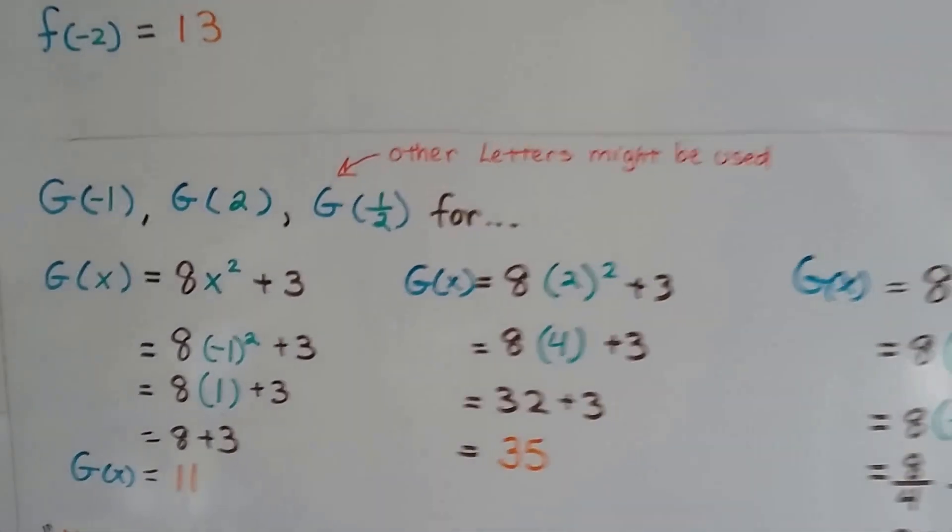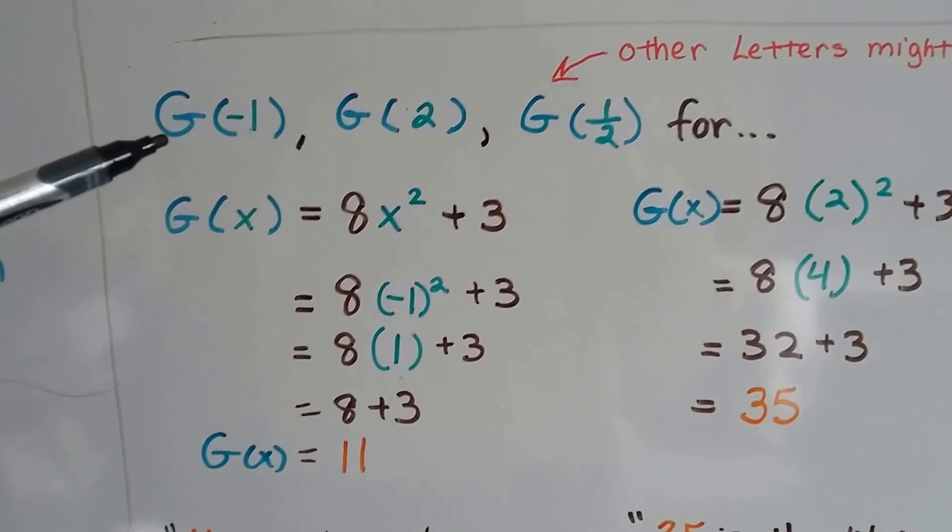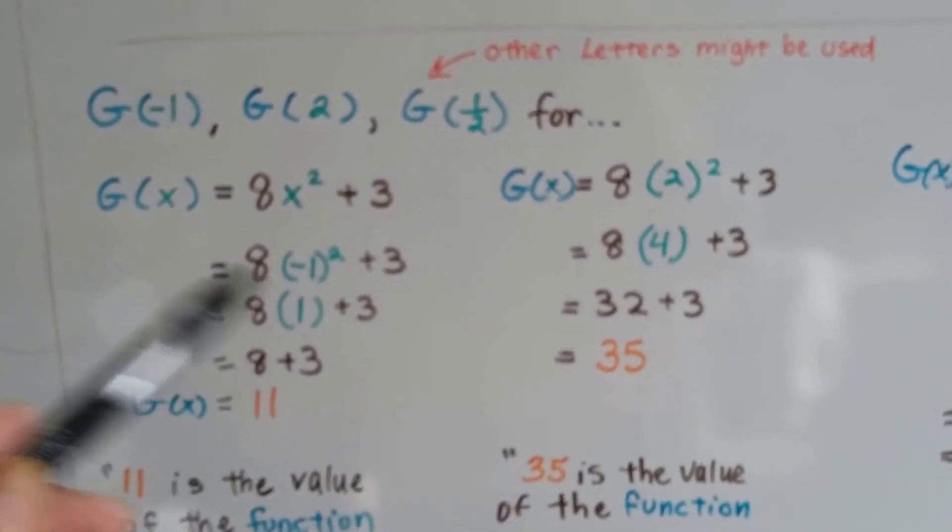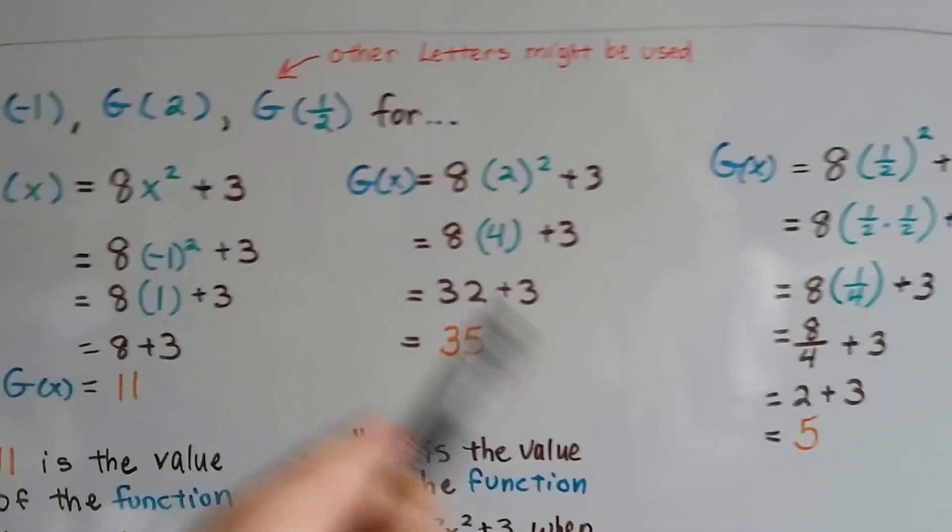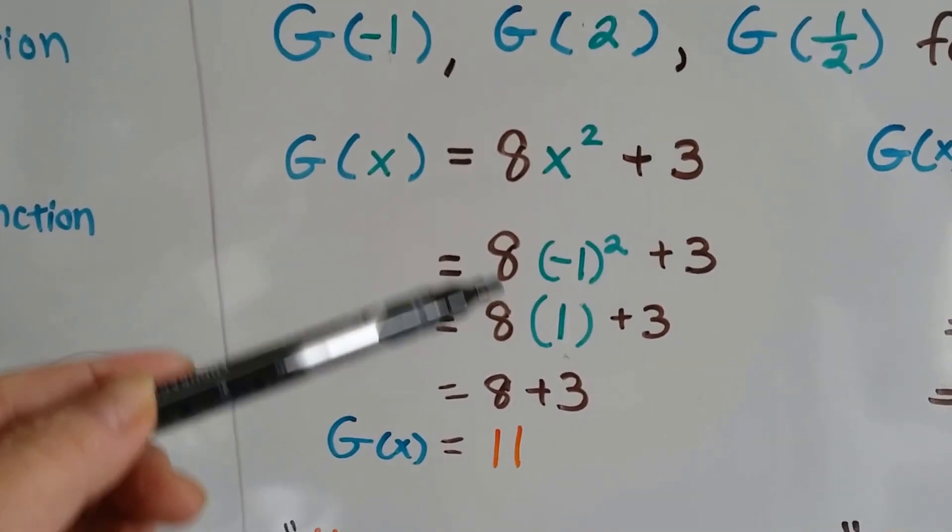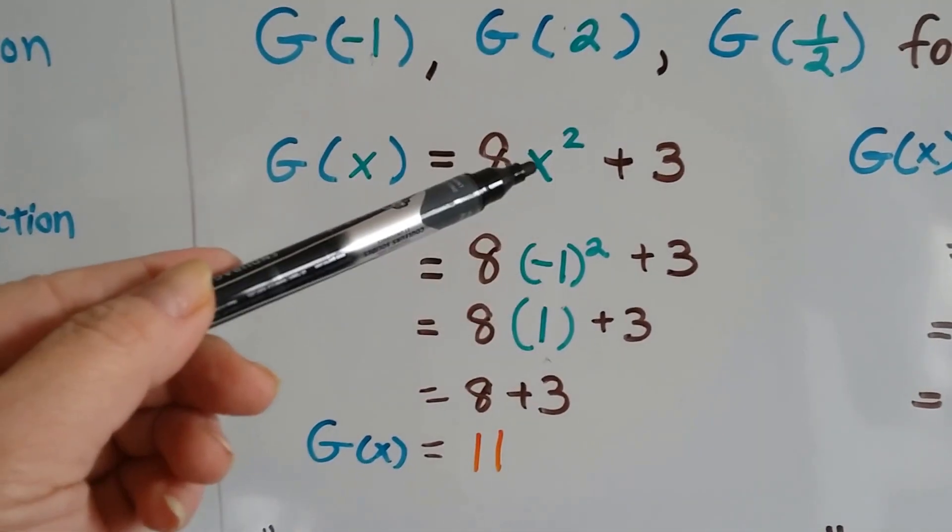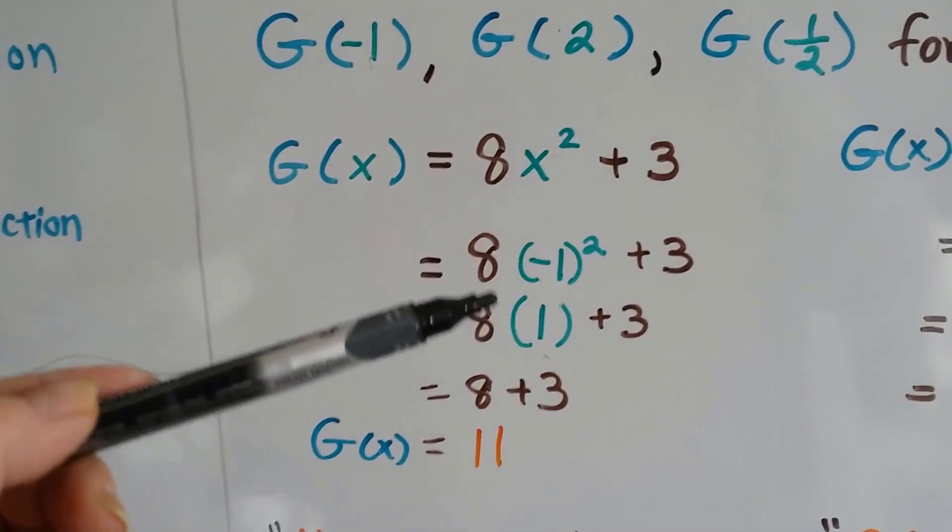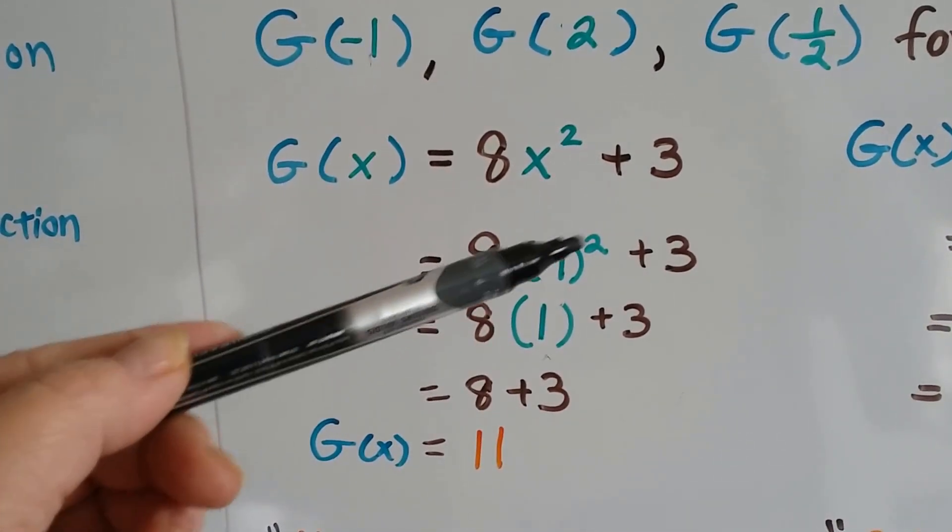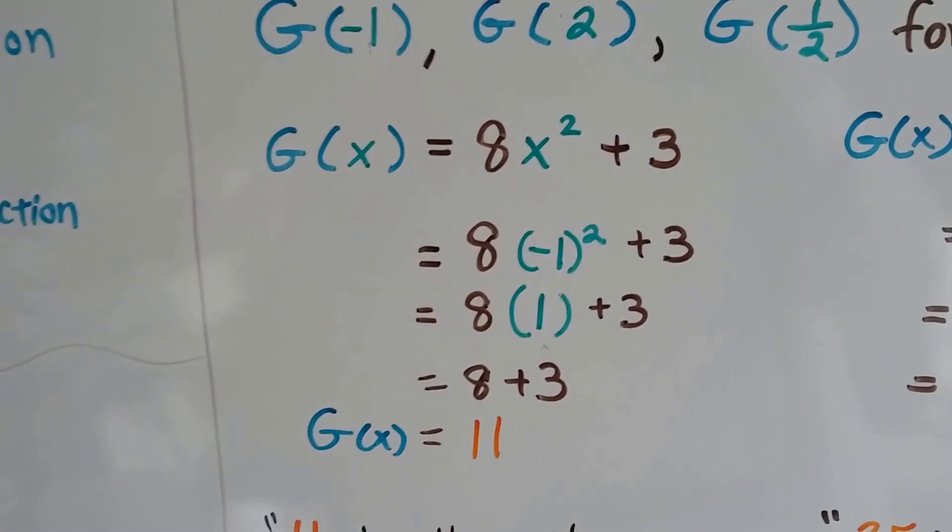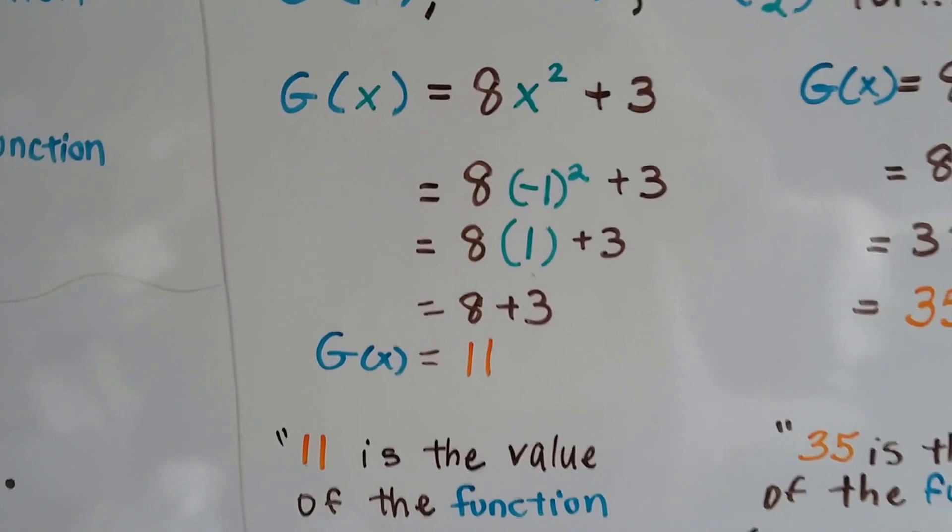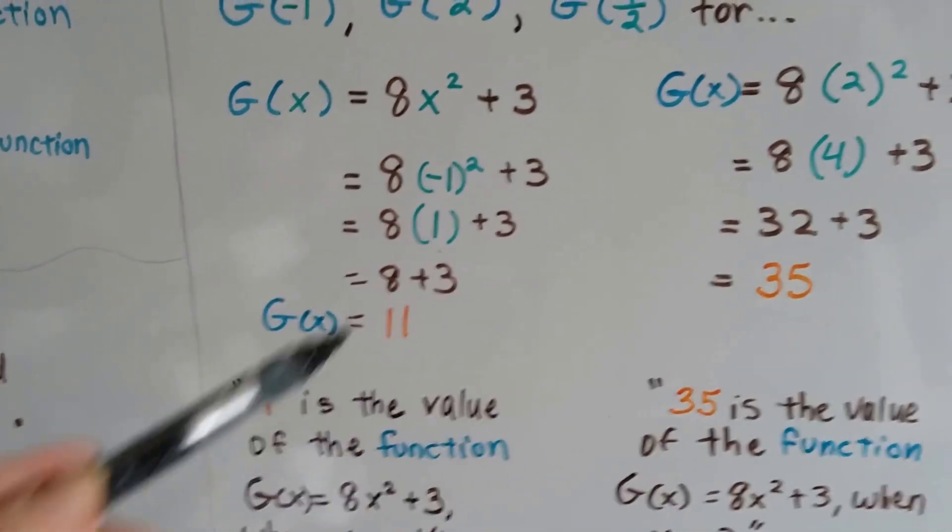Here's a capital G, and we've got a negative 1 or a 2 or a half. So here I did the negative 1, here I did the 2, and here I did the half. So negative 1 is going to be plugged in for x. Now we've got 8 times the square of negative 1. Negative 1 times negative 1 is a positive 1. So we get 8 times 1 is 8, plus 3 is 11. 11 is the function value.